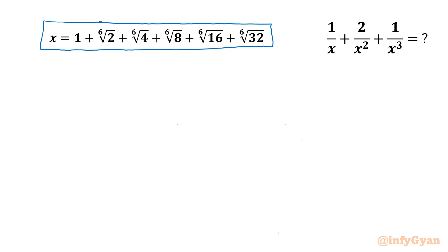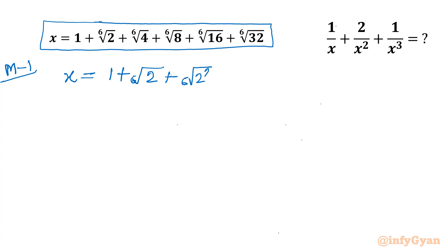I will showcase two approaches. So let me write here Method 1. I will consider x as 1 plus 6th root of 2 plus 6th root of 2 squared, which is 4, plus 6th root of 2 cubed, which is 8, plus 6th root of 2 to the power 4, which is 16, and 6th root of 32, which we write as 2 to the power 5.